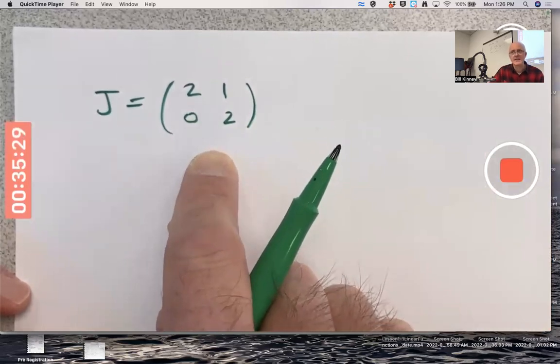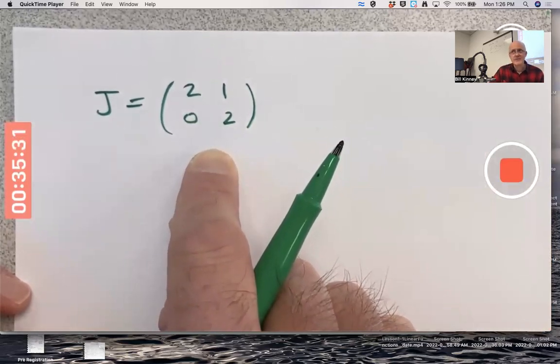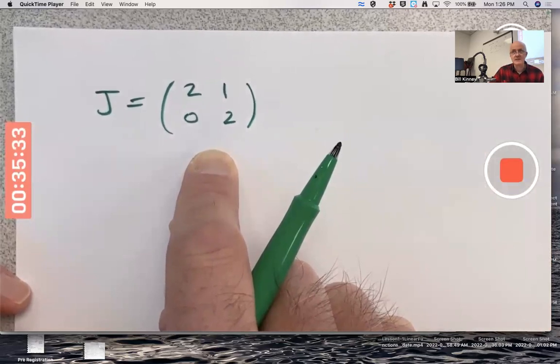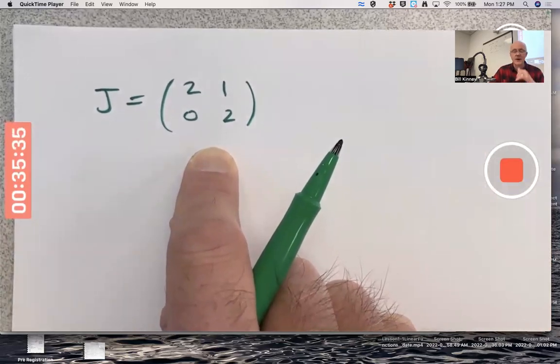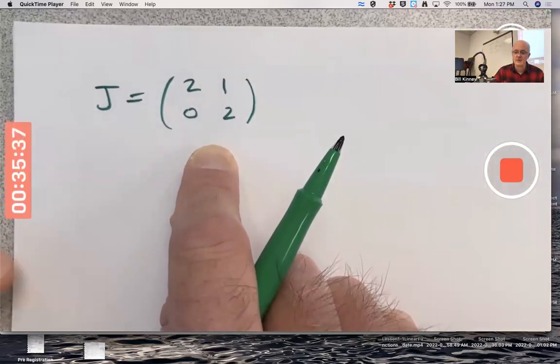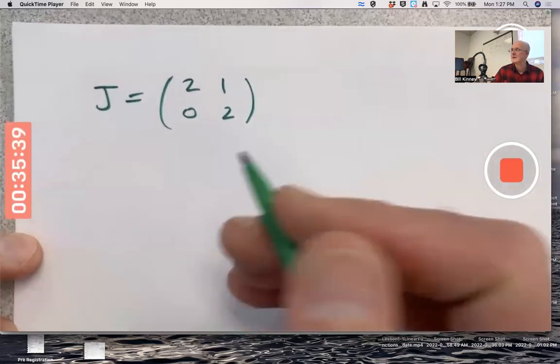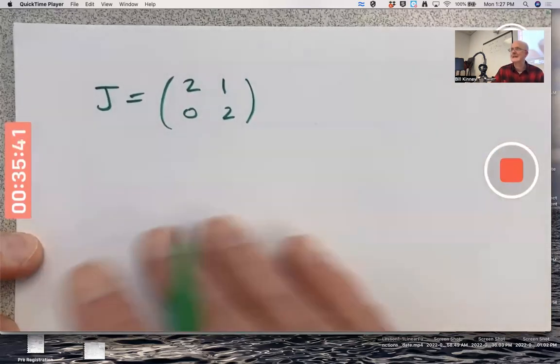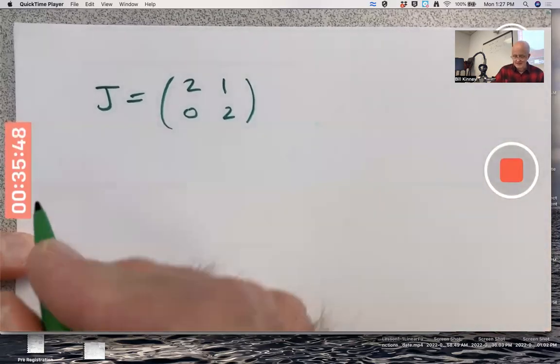There's no P you could find that would make P inverse JP diagonal. It's just impossible. It's pretty easy to verify. You could try an example of a general P and you would do a bunch of calculations and you'd see it would never work. Here's another way to see it.